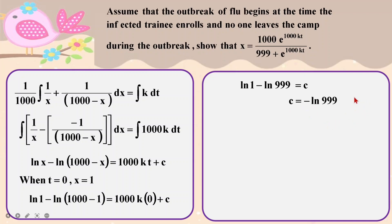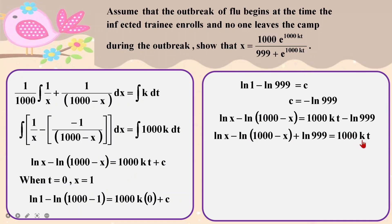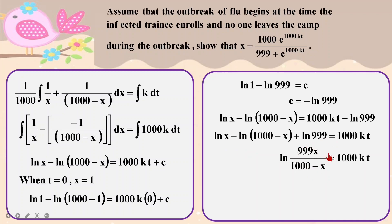Always ask yourself questions when solving problem questions. I get the value of C and I'm going to substitute it back into the equation. Once that is done, the next thing is to settle the K. I need to change my equation into something I can solve — bring the ln terms together and rearrange. ln minus means divided, so ln x minus the whole set of (1000 minus x) will be divided, and plus means multiplied, so x and 999 are put together.